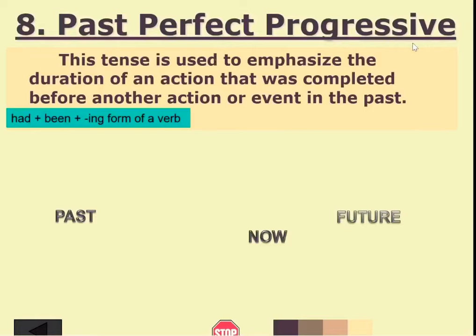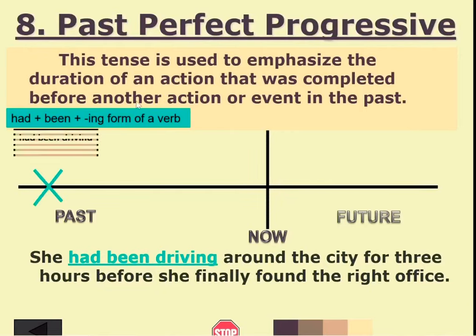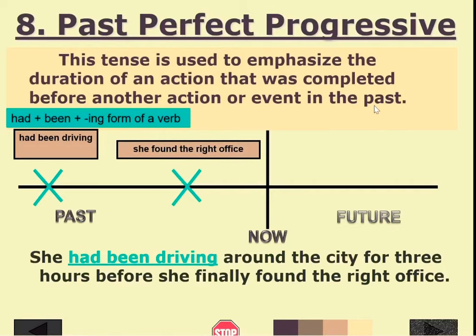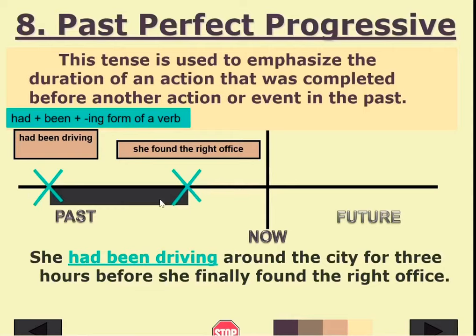Next is the past perfect progressive tense. This tense is used to emphasize the duration of an action that was completed before another action or event in the past. The pattern is 'had' plus 'been' plus the ing-form of the verb. For example: 'She had been driving around the city for three hours before she finally found the right office' — the driving was the completed ongoing action before a new event occurred.